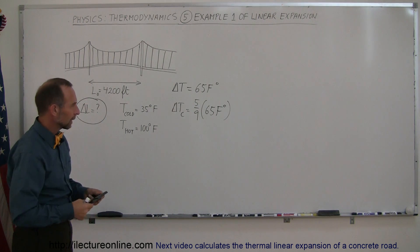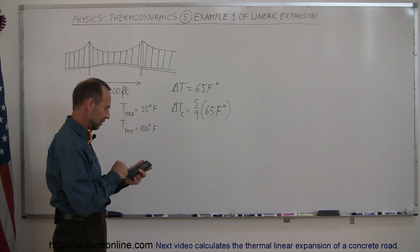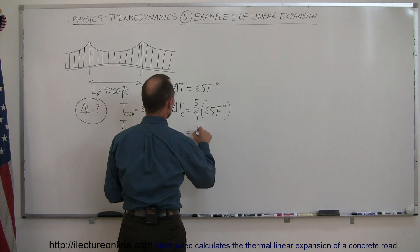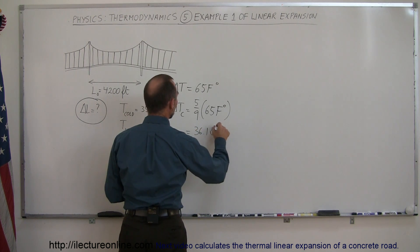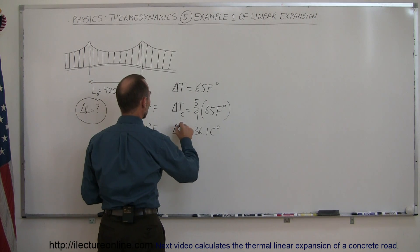For now, I'm going to need my calculator. So 65 divided by 9 times 5 is 36.1 degrees centigrade. So this is equal to 36.1 centigrade degrees. Notice it's centigrade degrees, not degrees centigrade. So that's the difference in the temperature.